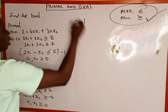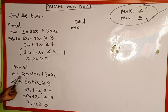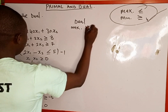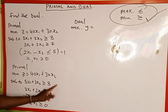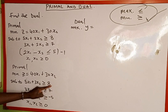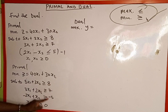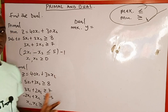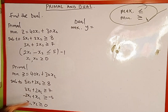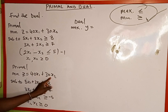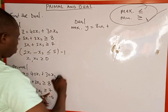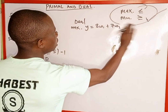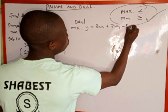The objective function of the primal is represented by z variables, so we use variable W for the dual. To get our objective function in the duality, we consider the right-hand side values of the primal constraints: 8, 7, and negative 5. So the dual objective function is: maximize W equal to 8W1 plus 7W2 minus 5W3.